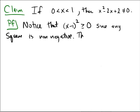Then, after expanding, we get that x² - 2x + 1 ≥ 0.